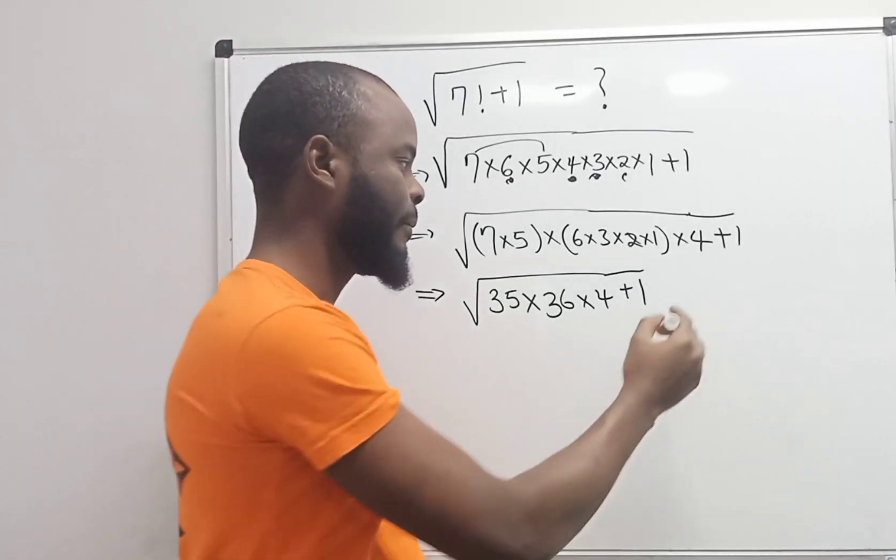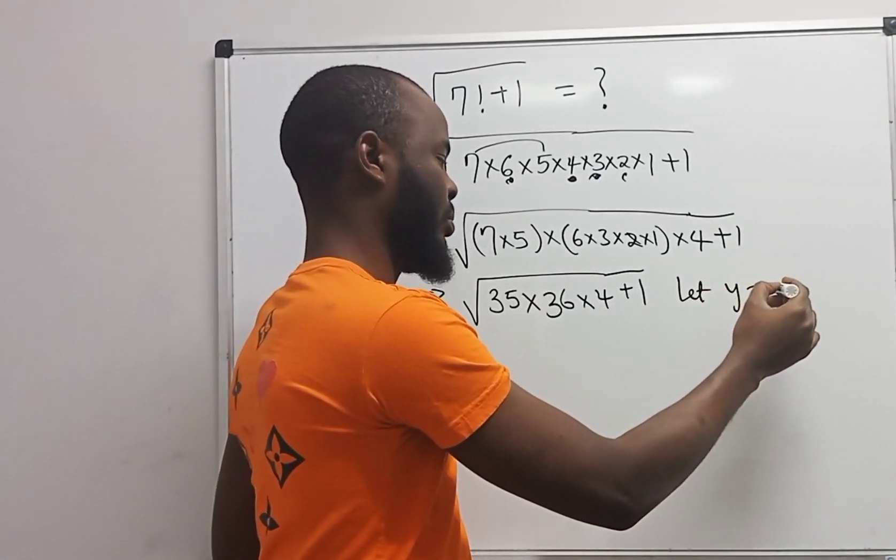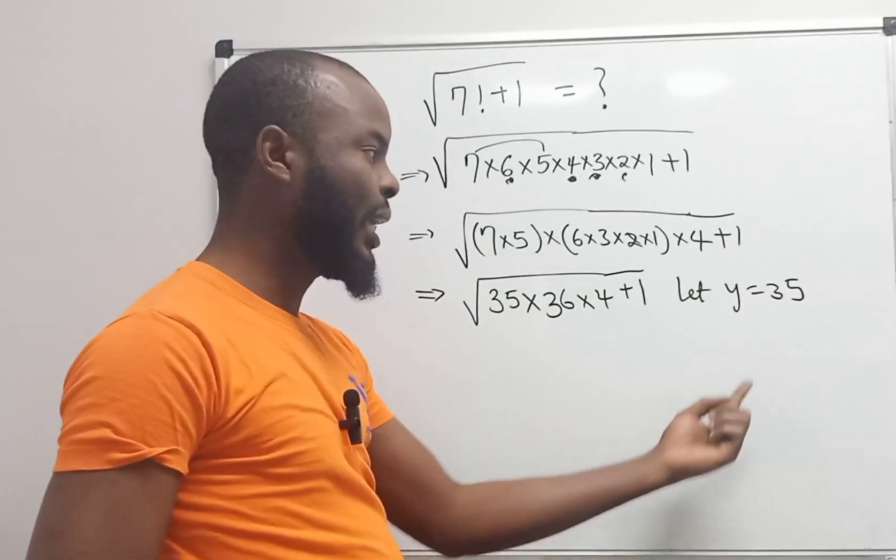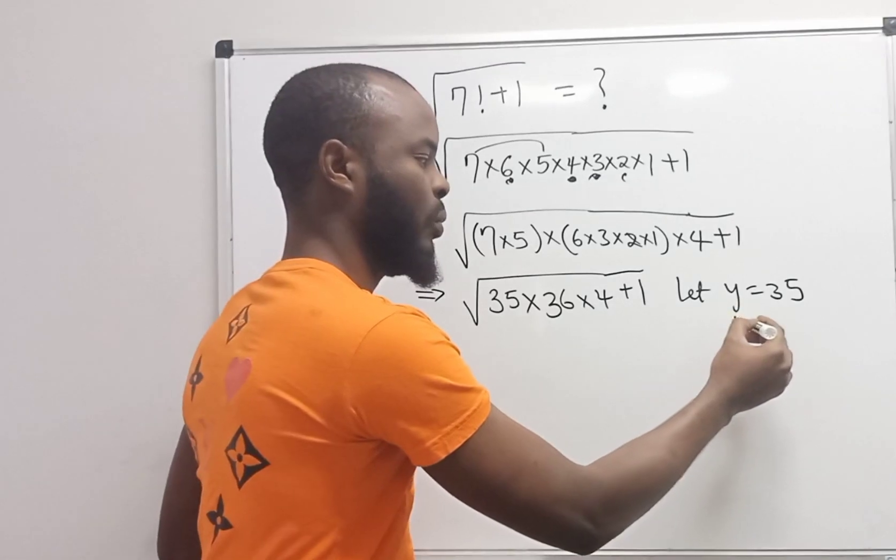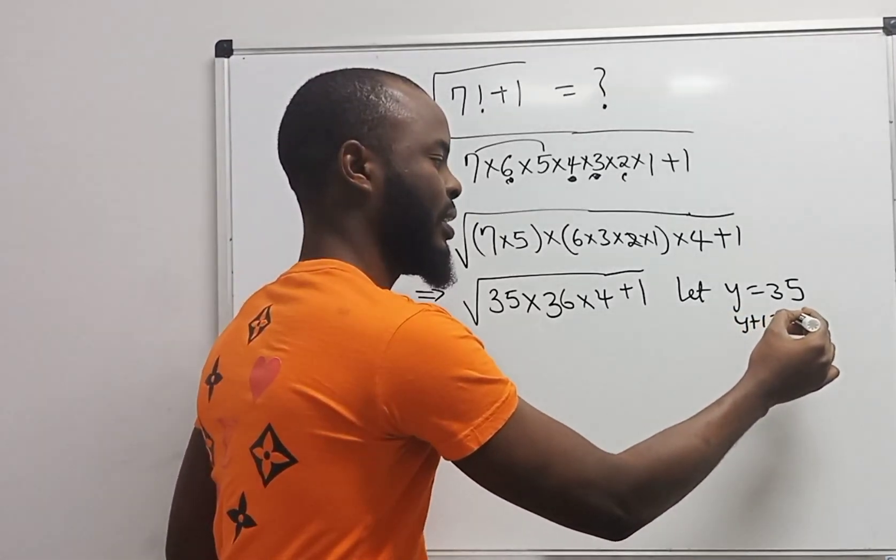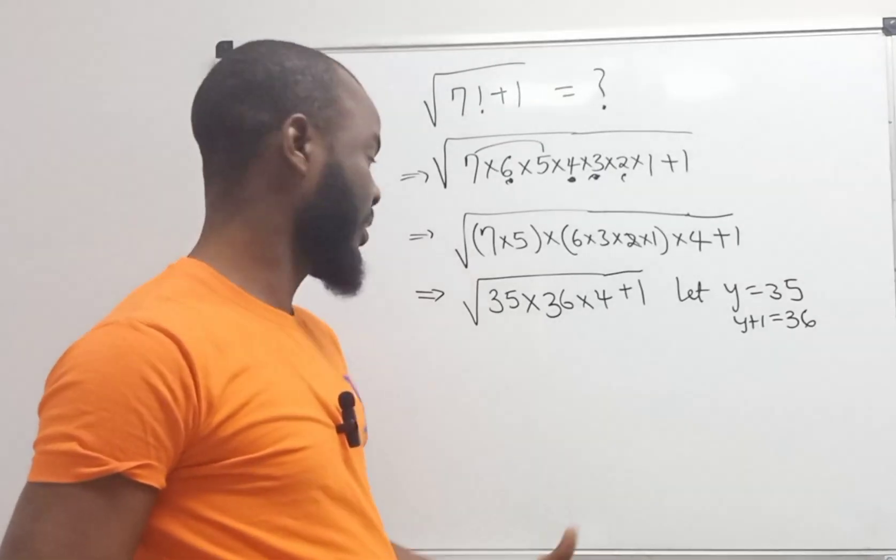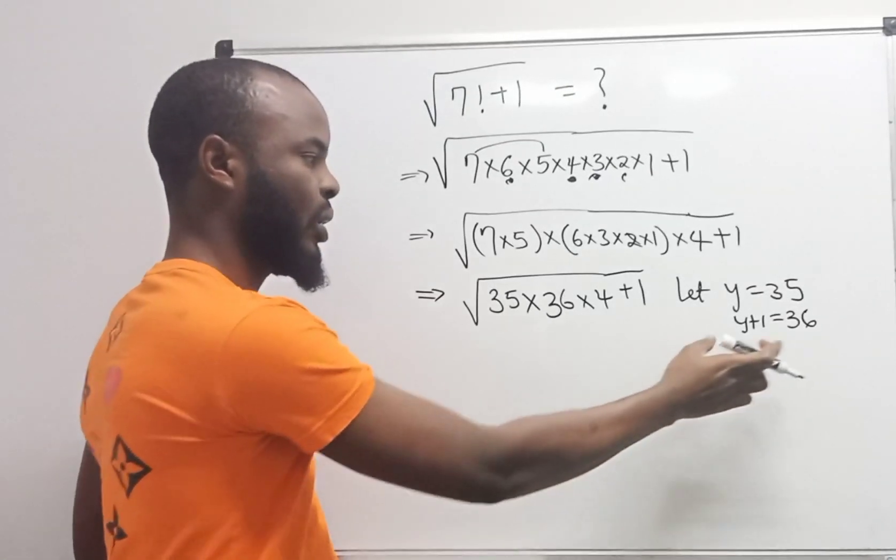Let y be equal to 35. Then if my y is 35, y plus 1 is the same thing as 36, because 35 plus 1 is the same thing as 36.